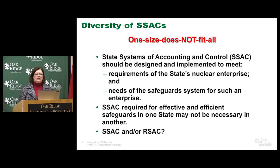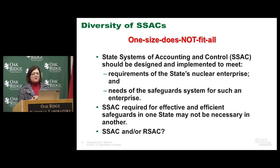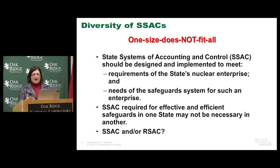One of the questions that we've been asked to think about is where does the state system and the regional system come into place. The state system is easy to understand in most cases because it comes from the state level to the IAEA. The regional system is a step between the state system and the IAEA. Does this duplicate the activities? Does it represent an extra burden on the countries that are members? How much does the agency acknowledge the effort of the regional system to minimize inspections in the state? All of these questions are asked on a current basis.